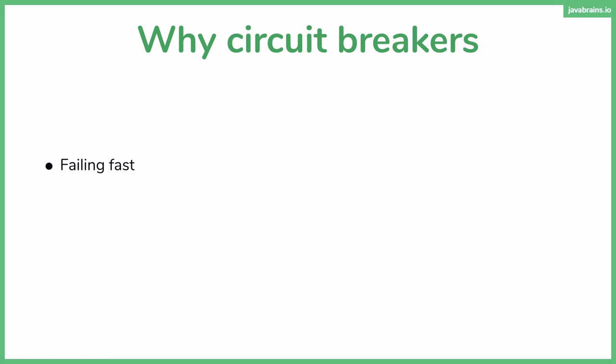With circuit breakers, you're actually doing that. When you realize that something is taking time and being slow, you say: I'm going to fail fast from now on. I'm not going to call that service, have a timeout, and eventually return an error — I'm just going to do it right away. That adds to the resilience and the fault tolerance of the microservice. Failing fast is a good thing.